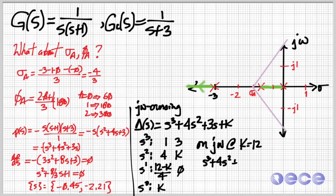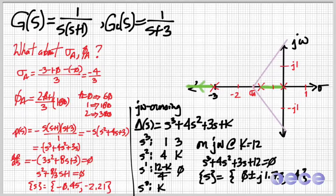So for k equals 12, we can calculate that the roots are zero plus or minus j1.73 and minus four. So if j1 is here, then j1.73 is about there. So our root locus crosses over here. And that provides us with a fairly accurate sketch of what's going on.